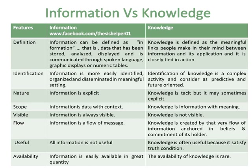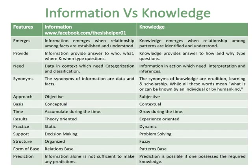Information is always visible while knowledge is not visible. Information is a flow of messages, while knowledge is created by that very flow of information anchored in the beliefs and commitment of its holder. All information is not useful, while knowledge is often useful because it satisfies the truth condition. Information is easily available in great quantity, while the availability of knowledge is rare. Information emerges when relationships among facts are established and understood, while knowledge emerges when relationships among patterns are identified and understood.